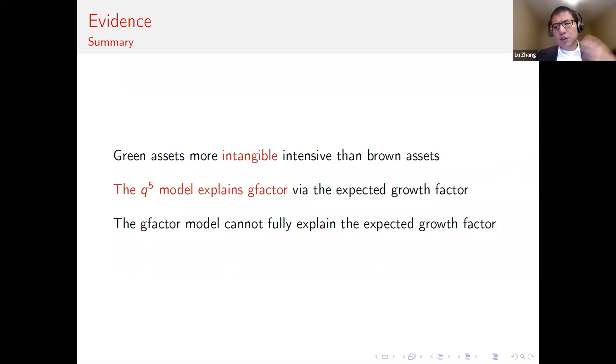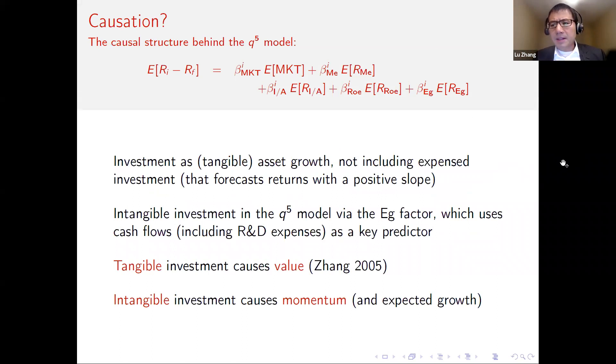So far, these are empirical correlations. Let me start to think a little bit deeper about causation. What is the causal structure that is driving, that is underlying this layer of reality that we call capital markets, that we call cross-sectional asset pricing? This is what I have in mind. We have put together the empirical Q5 model, in which investment factor is constructed as tangible asset growth, not including intangible investment. And intangible investment forecasts returns with a positive slope, as opposed to tangible investment that forecasts returns with a negative slope. However, intangible investment is indeed incorporated in the Q5 model through our expected growth factor.